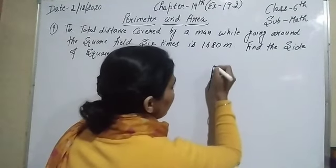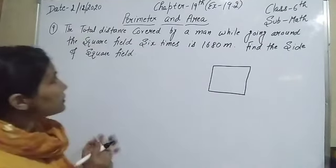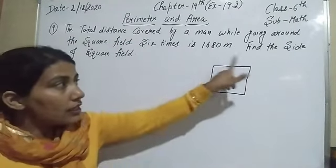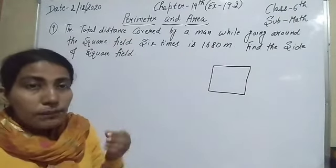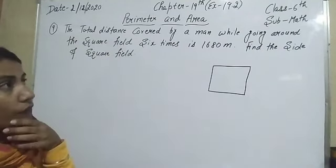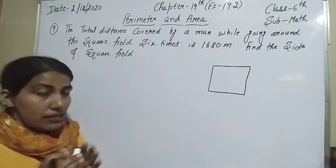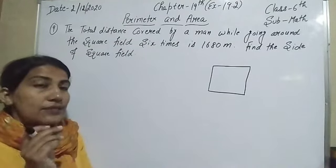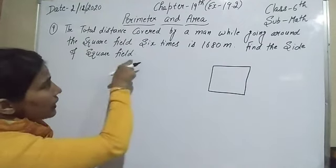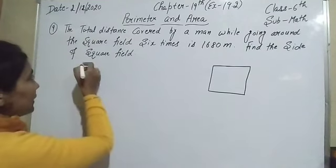Let me draw the shape of the square field. Here it is — the square field. When we talk about the distance covered going around, that means we are talking about the perimeter of the square. The perimeter of a square is four multiplied by side. We have to find the side of the square, so let us suppose the side of the square is equal to a.